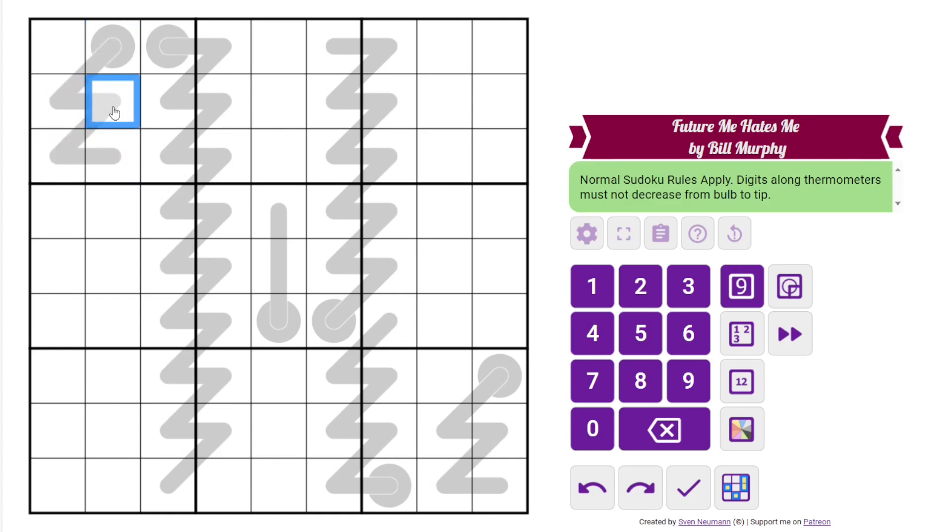And this thermo and this thermo are entirely contained in one box and this thermo. So they're going to work like normal thermometers. But slow thermometers can repeat digits, they just can't decrease. So from here to here we're going to have to increase because they're in the same row, but this digit could be the same as this digit. As long as we don't go down, we're good. And we're going to have to repeat digits on these really long slow thermometers.